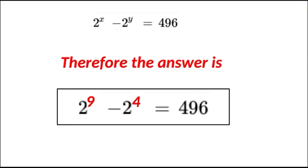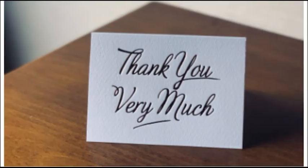Therefore, we have our answer. And our answer is 2 to the power of 9 minus 2 to the power of 4 is equal to 496. So I hope you enjoyed watching this video. Please give a thumbs up and also subscribe. Thanks a lot for watching and see you again on the next video.